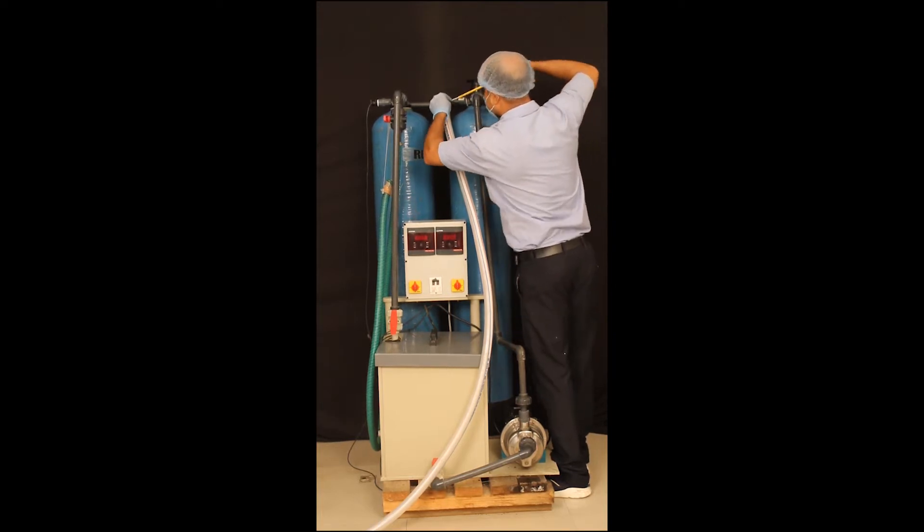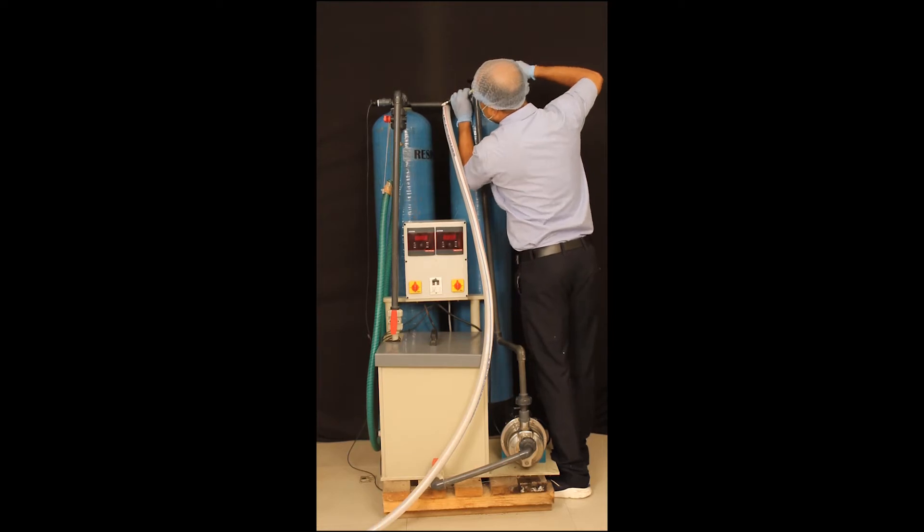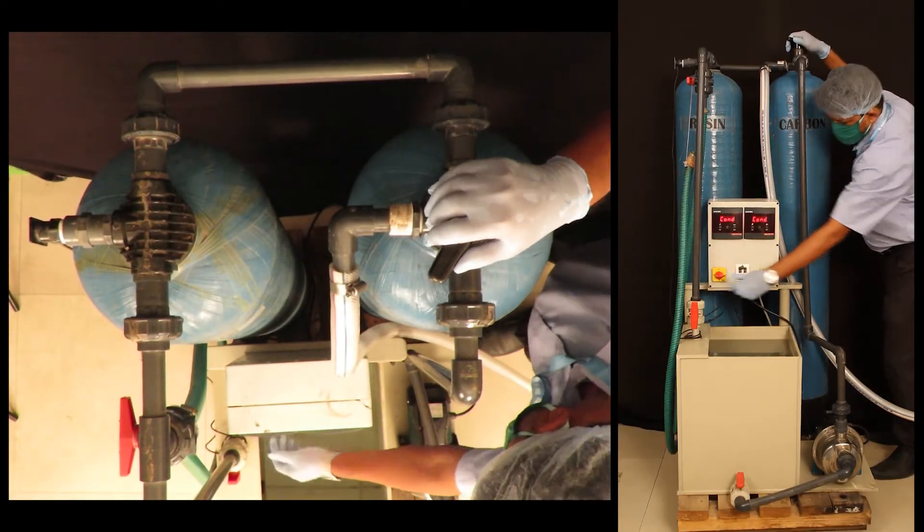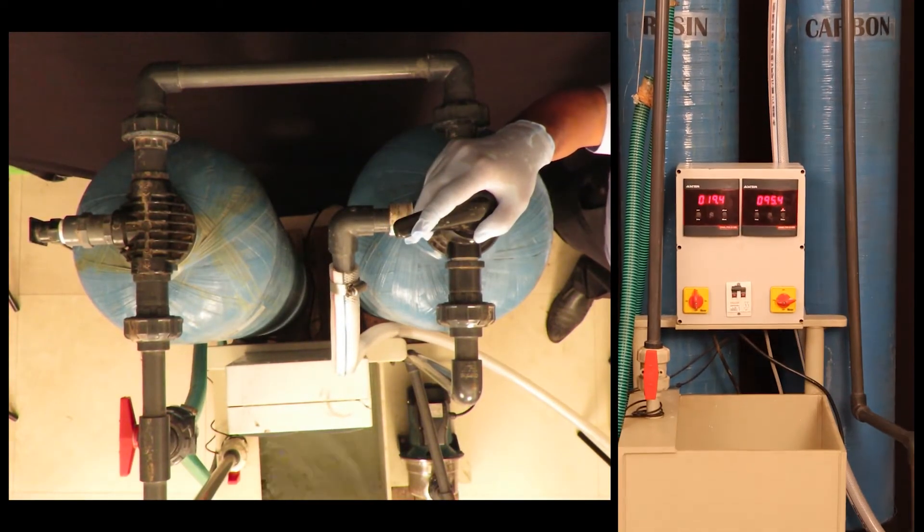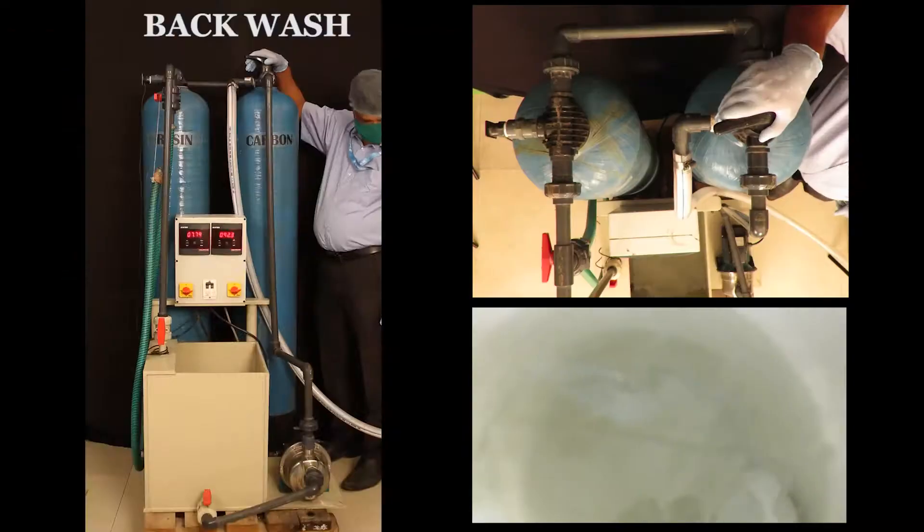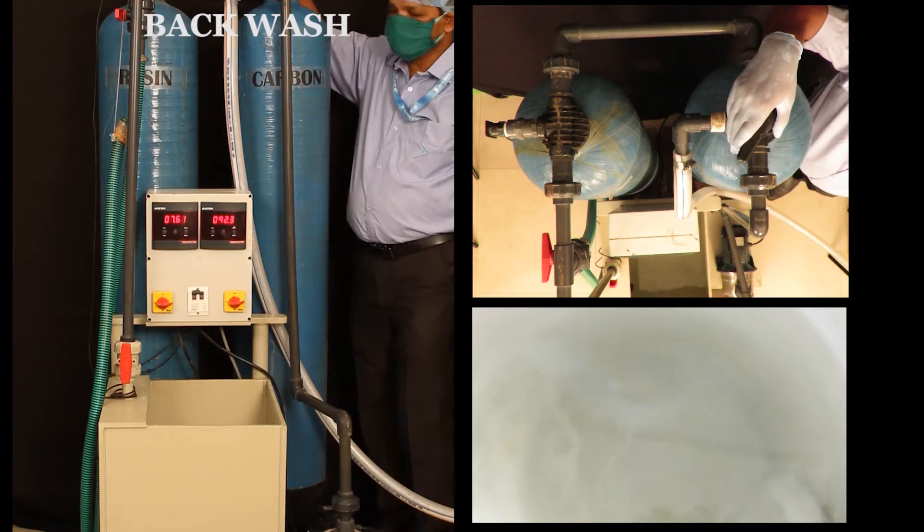In case you get TDS of water between 1 to 20 from your plant, as shown in the video, we recommend you to do a backwash for 1.5 to 2 minutes.